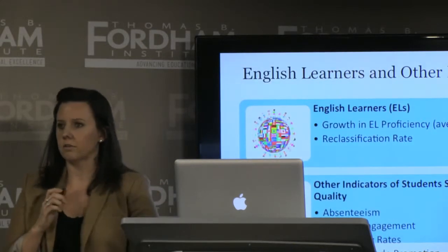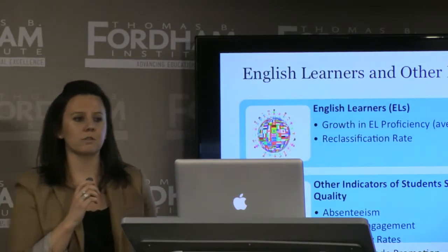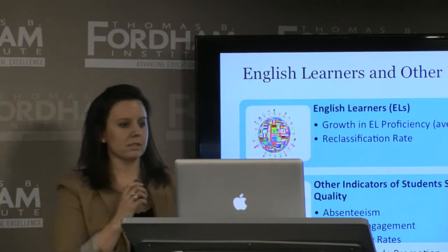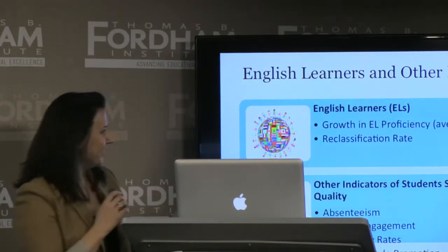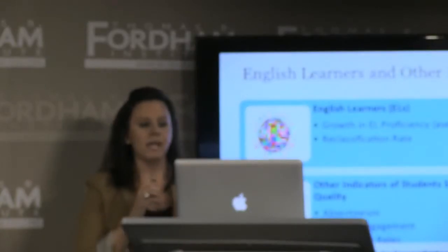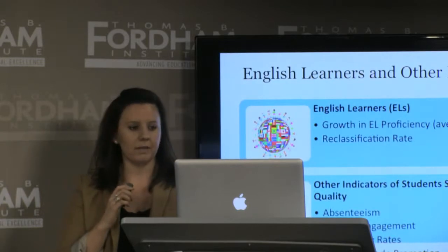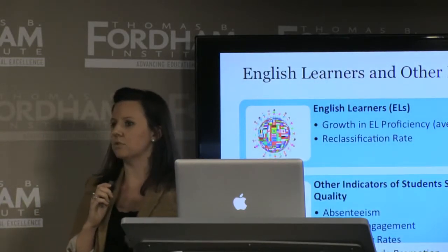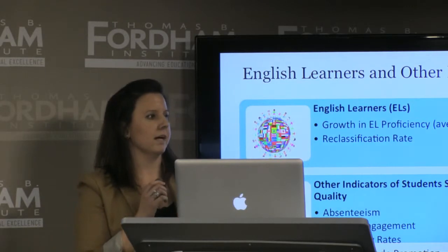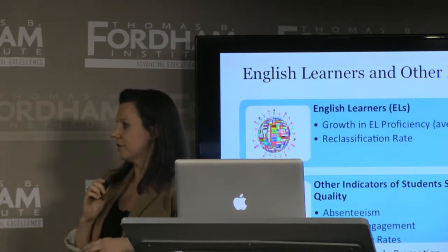Two other things we're looking at are English language learners, and we're giving credit for two things: improvement in proficiency over time and the reclassification rates of students to proficiency. We also have another system of indicators for school and student success, looking at five things: absenteeism, a survey of student engagement, disciplinary rates, on-time grade promotion to grades following elementary school, and access to a full curriculum — which includes all core subjects as well as physical education and the arts.